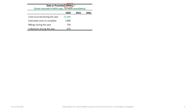We begin by reviewing the data as presented — the information is in thousands. The data shows the cost incurred in each year on a non-cumulative basis. Most problems will either use this format or an alternate presentation, but will contain the necessary information: costs incurred during the year, estimated cost to complete, billings during the year, and collections during the year.